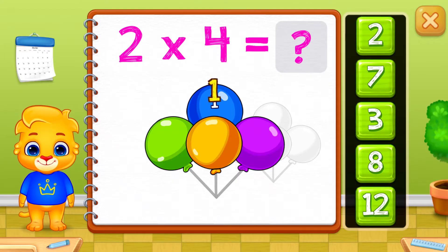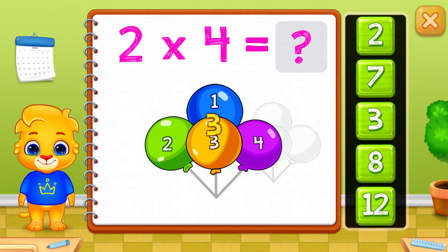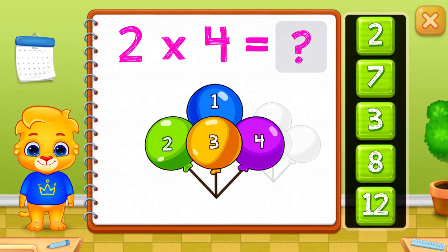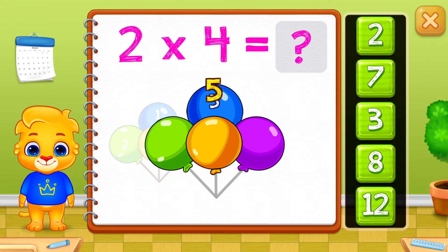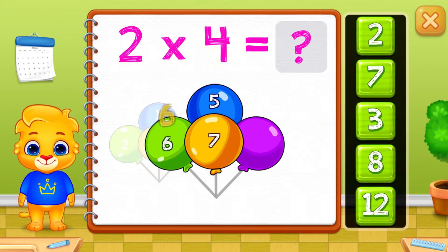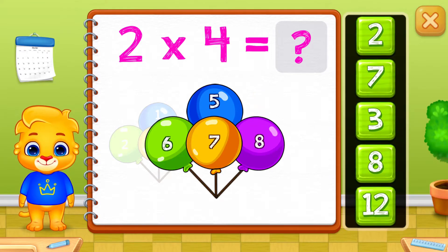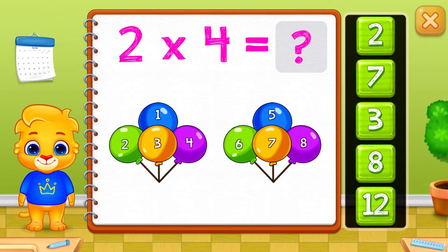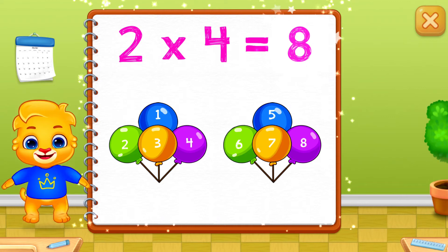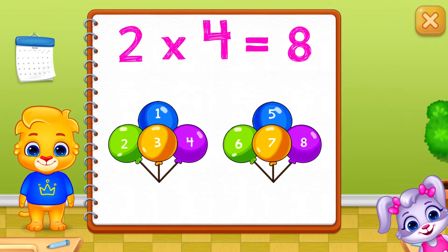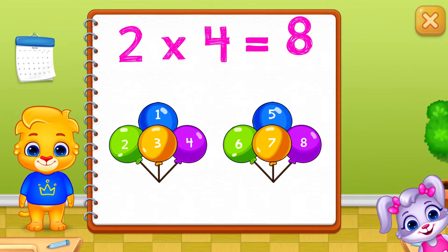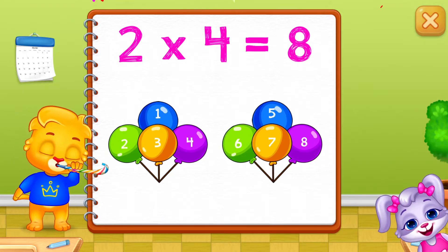1, 2, 3, 4, 5, 6, 7, 8. Two times four equals eight. Whee!